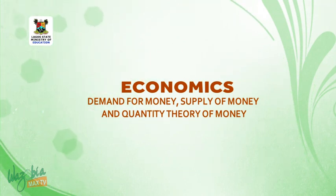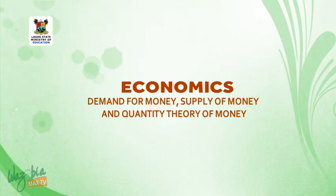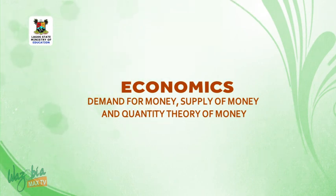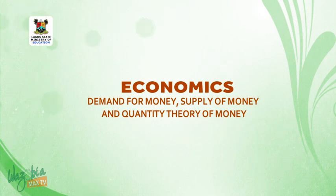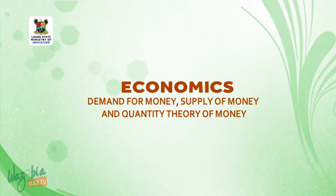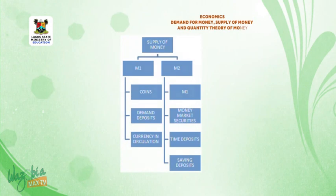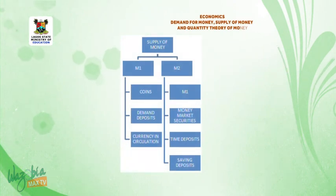Welcome back from that short break. We shall continue our discussion on supply of money. We want to classify supply of money using a diagram. Get your pencil and your ruler ready. Write 'supply of money' and then classify it into two: M1 and M2.